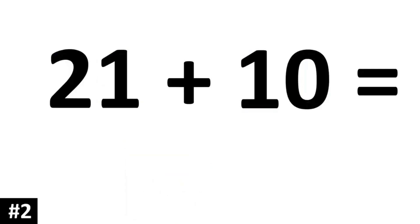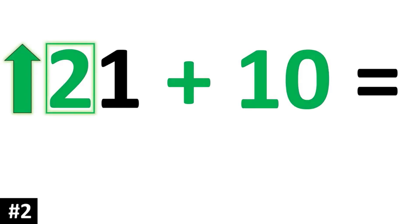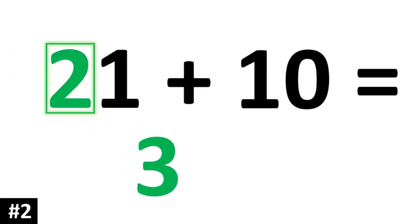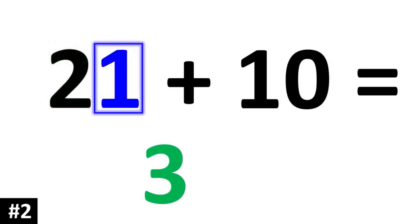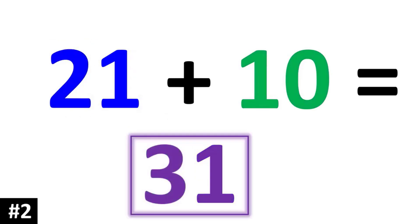Let's take a look at the next example. 21 plus 10: adding 10 to a two-digit number means the tens digit goes up by 1, so this 2 is going to become a 3. And the ones digit of 21 is going to stay the same, so we bring it down. 21 plus 10 is 31.